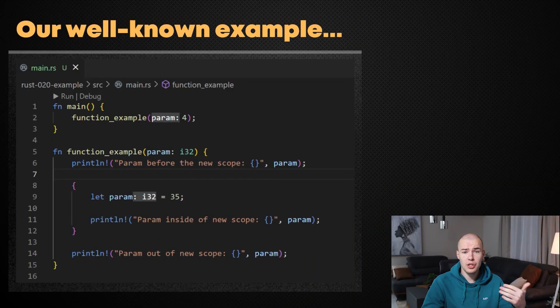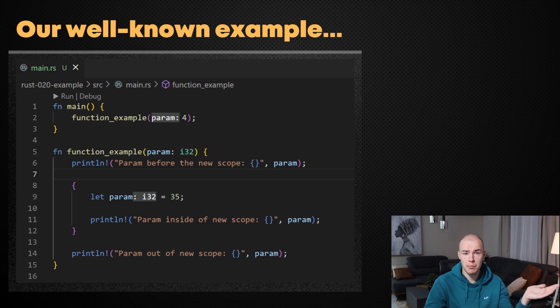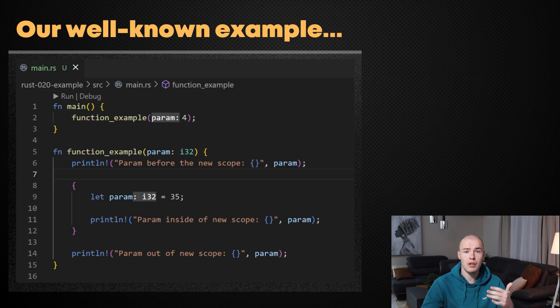I think the example we used in the previous lesson is going to be our perfect ally here. Let's open it in Visual Studio Code and see what I mean. You already know what results to expect from our example because we went through them in detail in the previous lesson, so right now we can focus only on explaining variable shadowing.